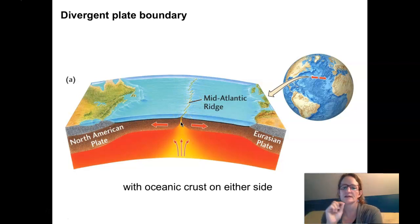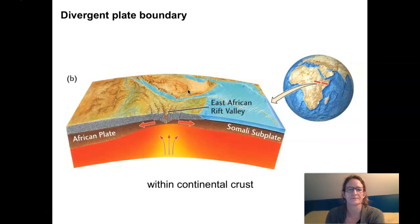Each of those segments then across that plate boundary is a little tiny transform plate where there's side-by-side motion. We'll zoom in on that. Another kind of divergent plate boundary would be a rift zone.